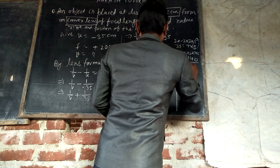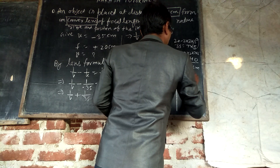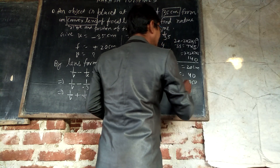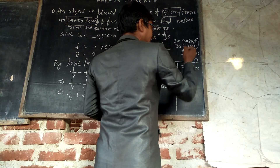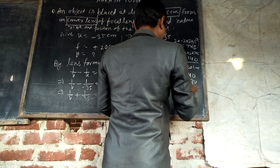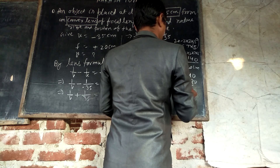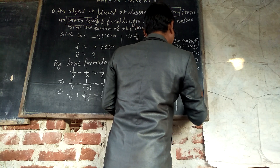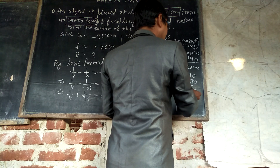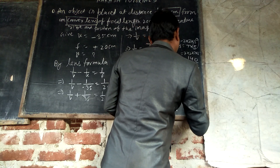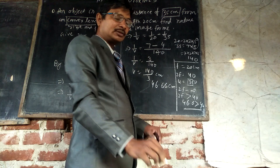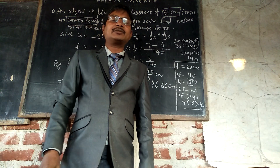Let us verify: F = 20 cm, so 2F = 40 cm, and U = 35 cm. Since the object is between F (20 cm) and 2F (40 cm), the image should form between 2F and infinity. Our answer V ≈ 46.6 cm is greater than 40 cm, confirming it lies beyond 2F. Hence, our answer is correct. Thanks for watching the video. Please like, share, and subscribe to my channel. Thank you.